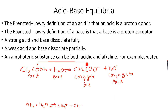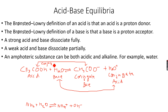So we have one conjugate acid-base pair and we have a second conjugate acid-base pair. These are called conjugate acid-base pairs, and these are the two conjugate acid-base pairs in this reaction.